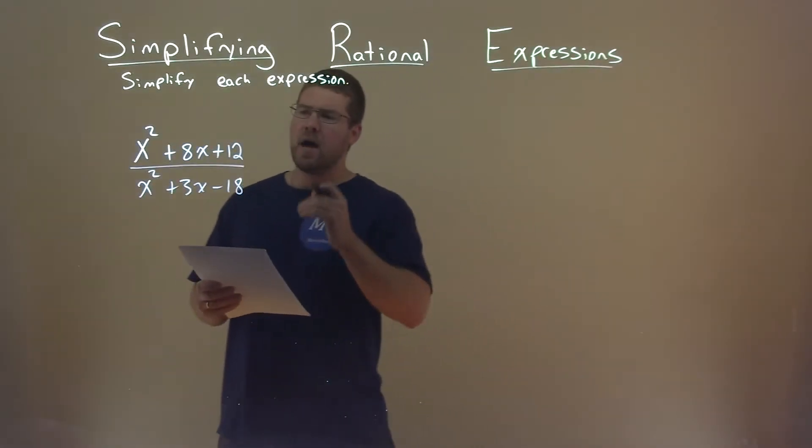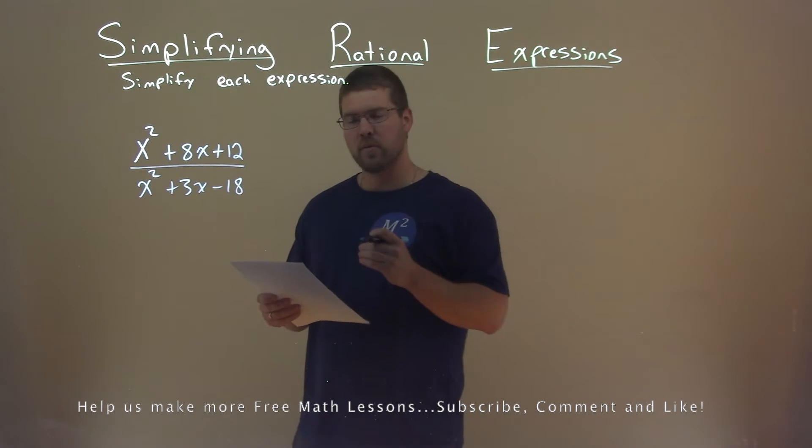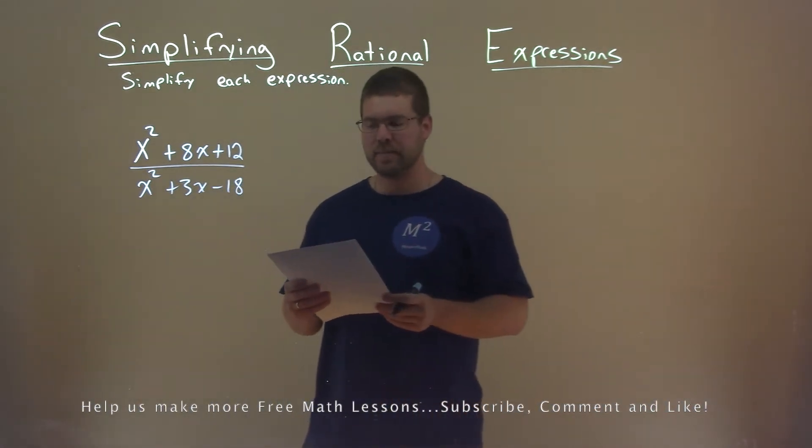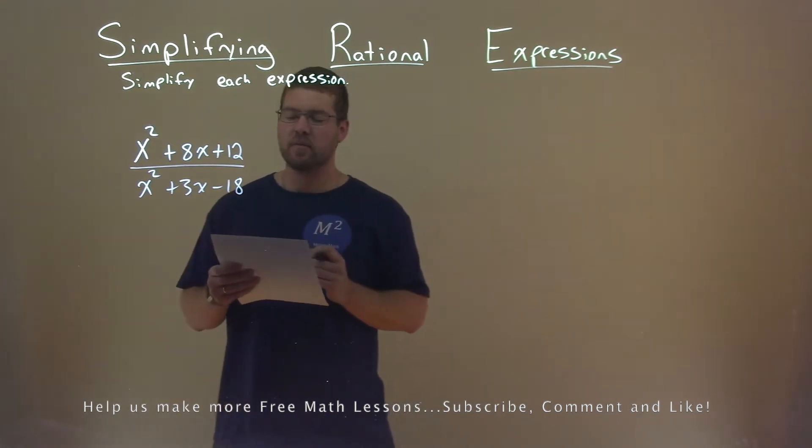We're given this problem right here: x squared plus 8x plus 12 over x squared plus 3x minus 18. And we want to simplify this expression.